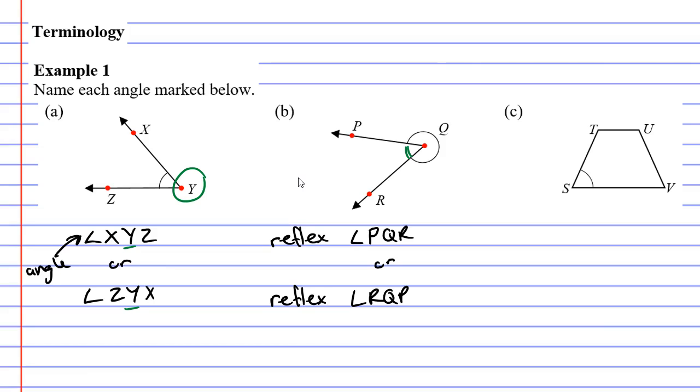So we're saying it's reflex angle PQR or reflex angle RQP. The reason we do that is this really large angle is called a reflex angle. A reflex angle is one that is larger than 180 degrees.